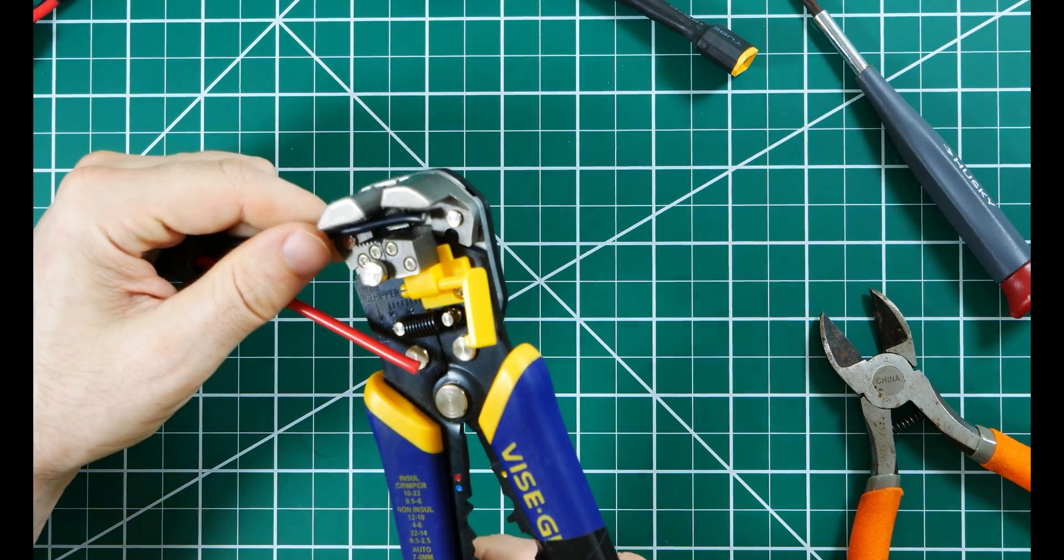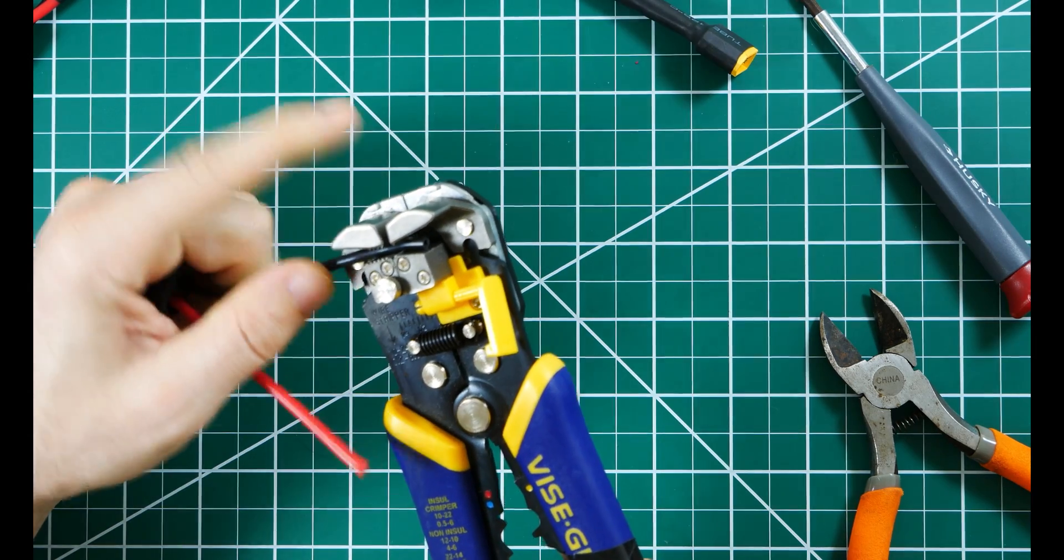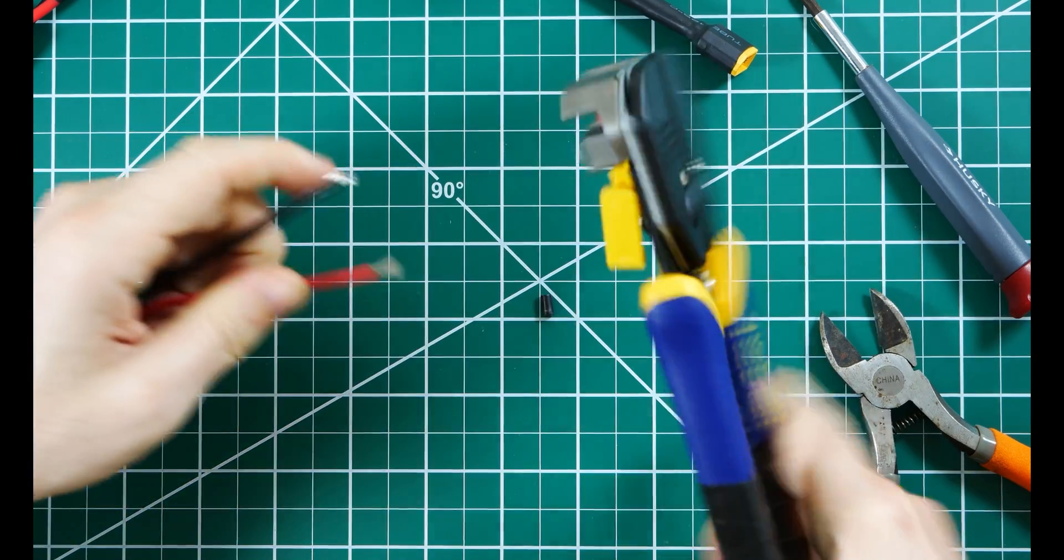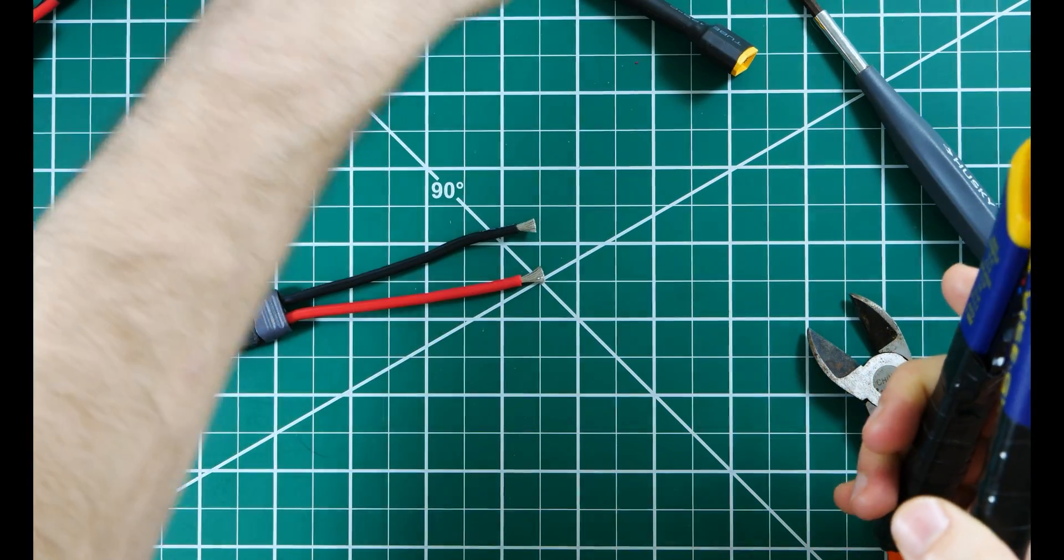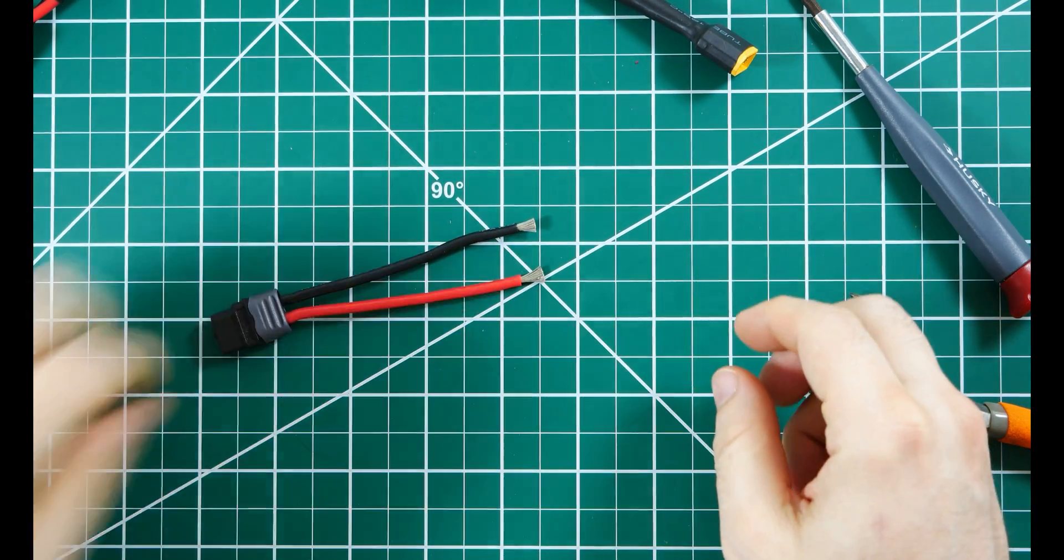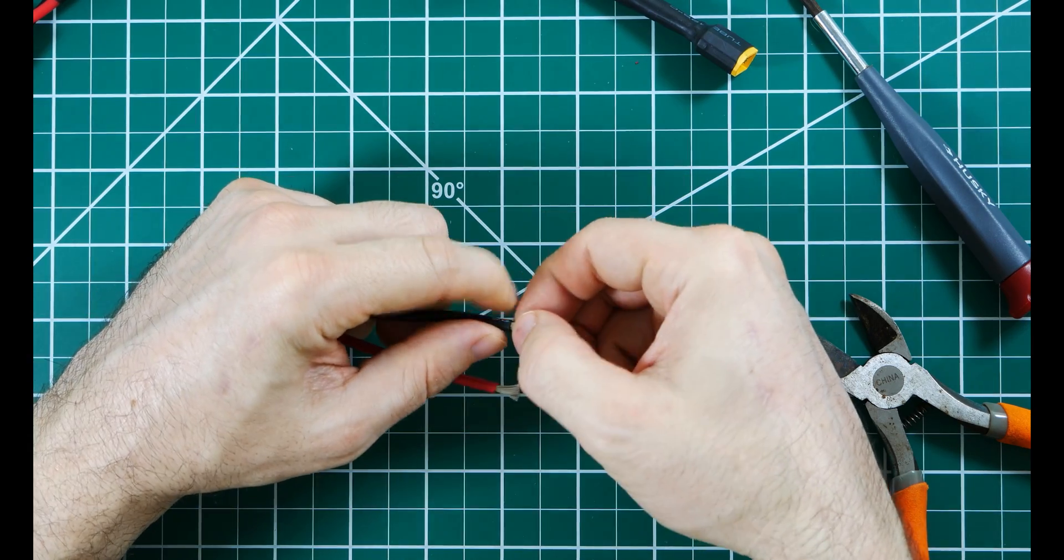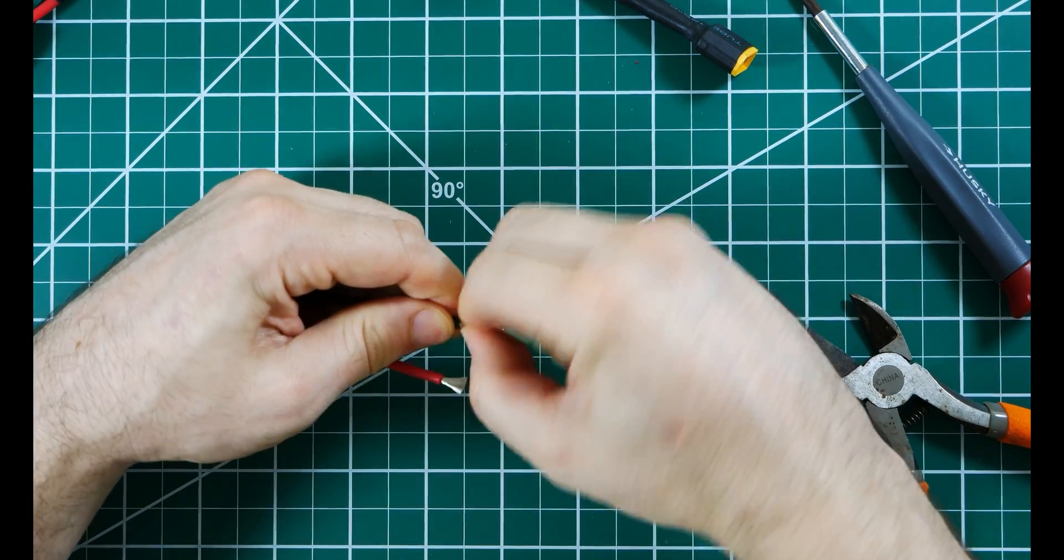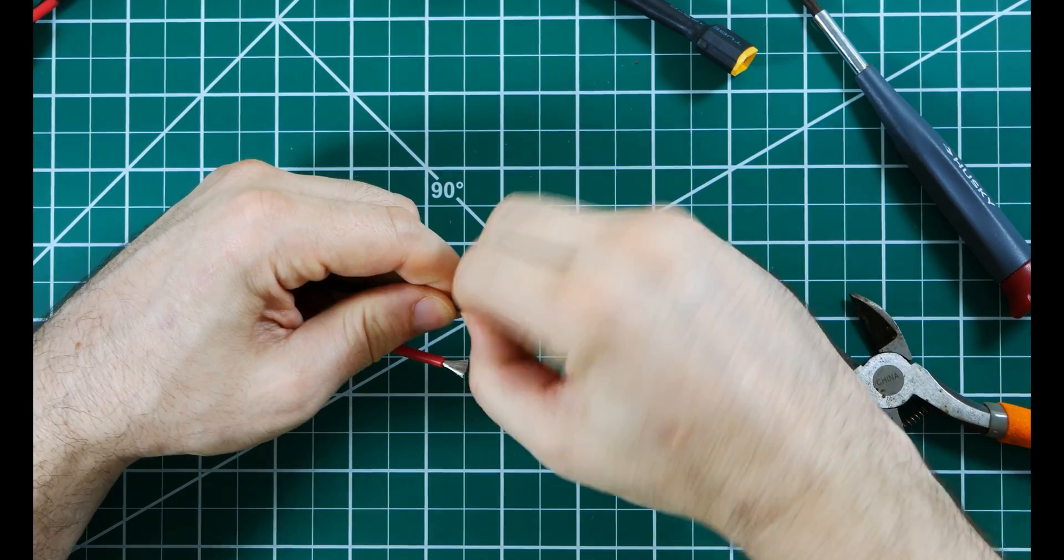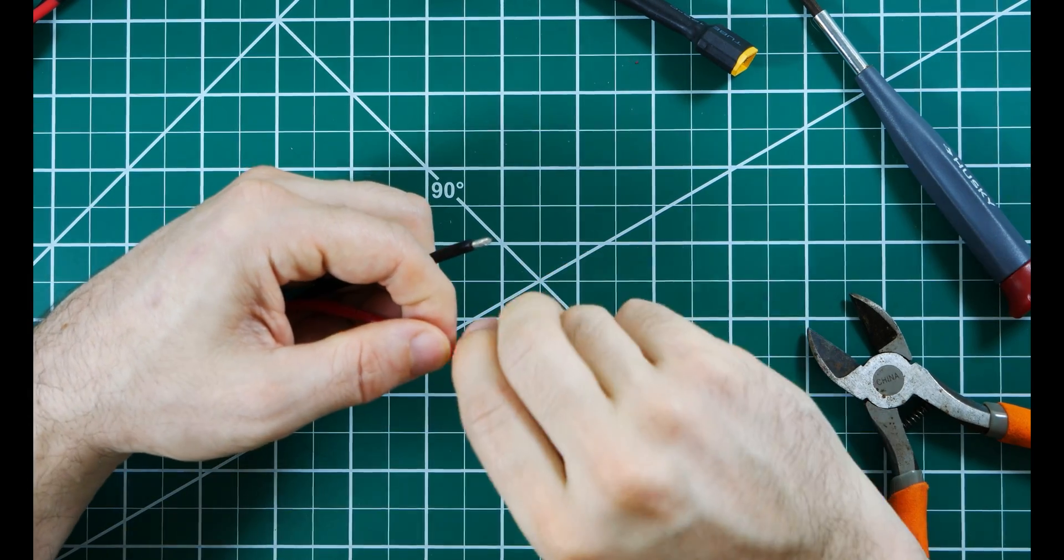Since that's just going to get in the way, let's just go ahead and strip this back a little bit. After cutting it, we've got ourselves some nice bare wires. What we're going to want to do here is make this as nicely twisted together as we can so that we can stick it all into the terminals.